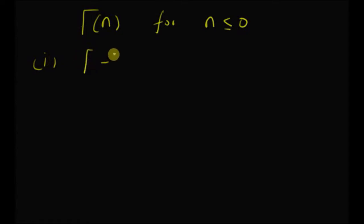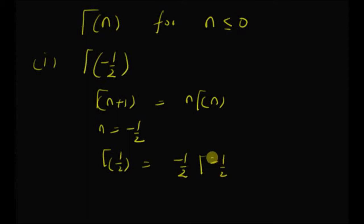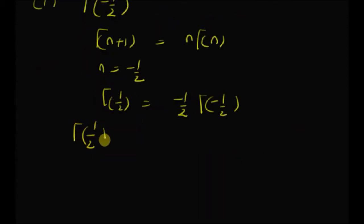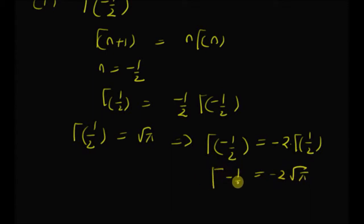The first value we are going to look at is gamma of minus 1 by 2. By using the property that gamma of n plus 1 is equal to n times gamma of n, for n equal to minus 1 by 2, gamma of 1 by 2 is equal to minus 1 by 2 multiplied by gamma of minus 1 by 2. We know that gamma of 1 by 2 is equal to square root of pi, as derived in another video. So this implies that gamma of minus 1 by 2 is equal to minus 2 multiplied by gamma of half, which is equal to minus 2 times square root of pi. Therefore, gamma of minus 1 by 2 or negative half is equal to minus 2 times square root of pi.